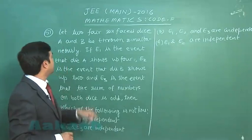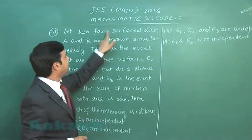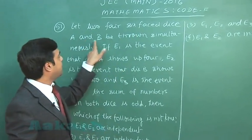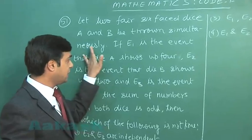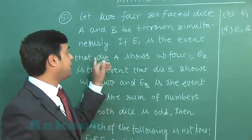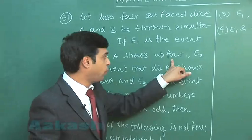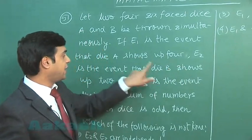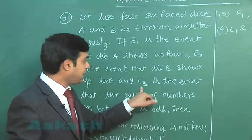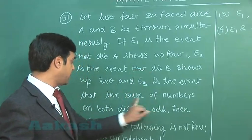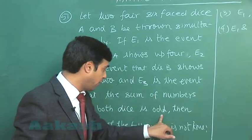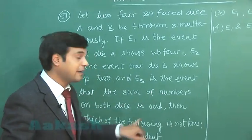Okay, let us consider the next one, that is question 51. Let two fair six-faced dice A and B be thrown simultaneously. E1 be the event that die A shows up 4, E2 be the event that die B shows up 2, and E3 that the sum of numbers on both dice is odd. Then which of the following is not true?